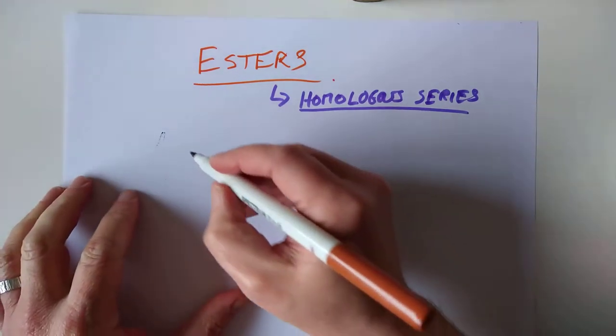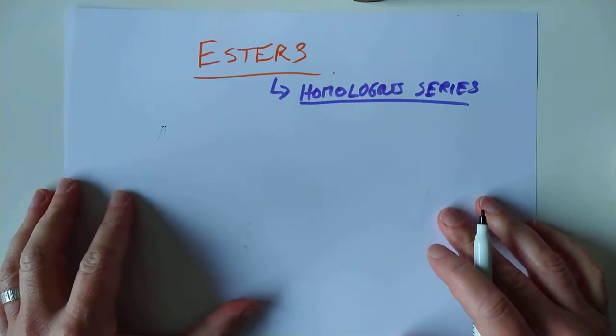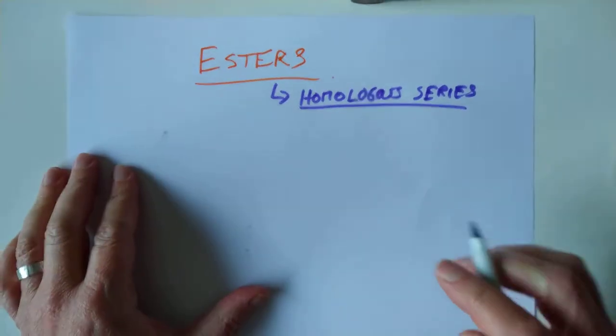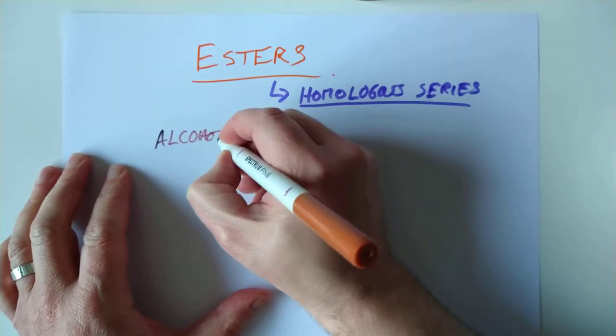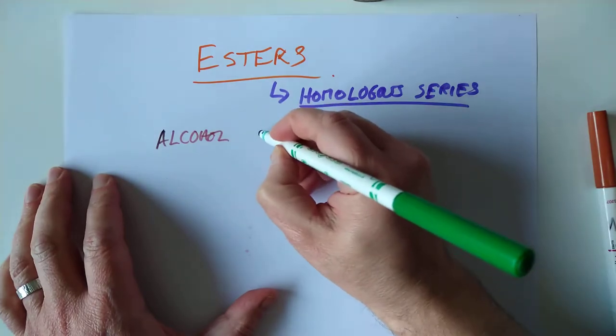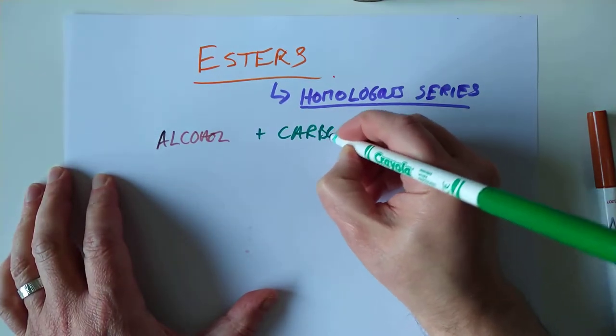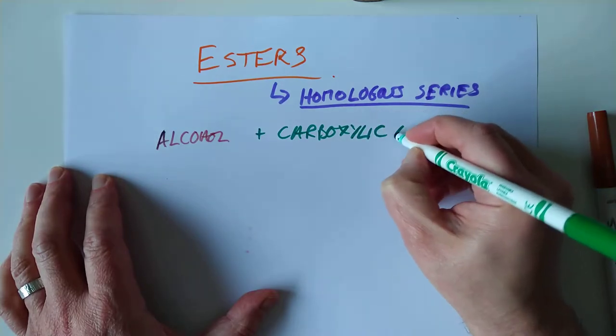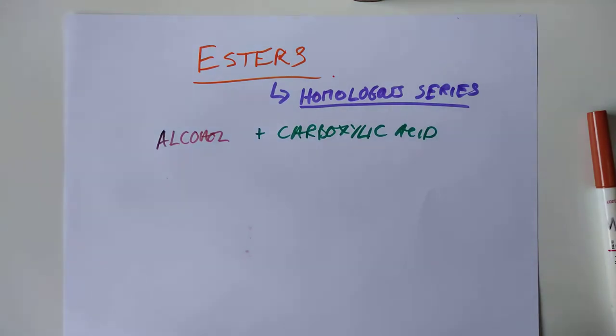As I was about to say, to make an ester, you require to join two different homologous series together. This is why this is a slightly different one to what we've ever seen before. You need an alcohol, a member of the alcohol family, and you need to join that to a member of the carboxylic acid family. When you join them together, boom, you make an ester.